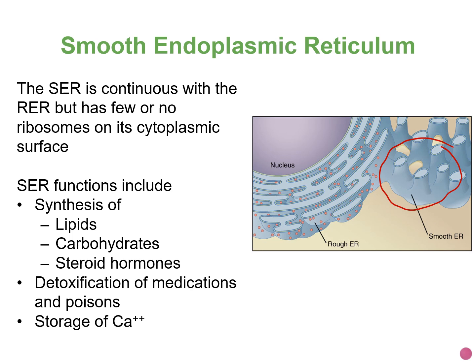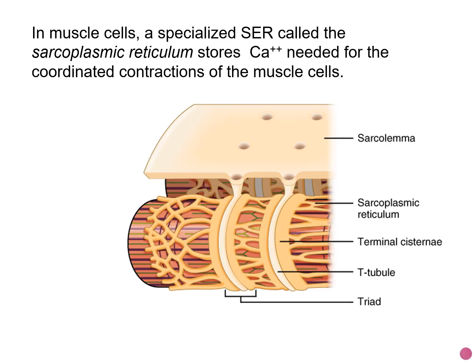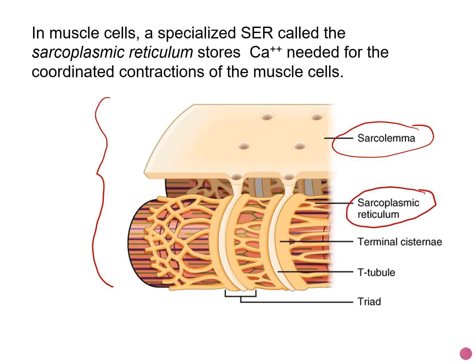In contrast to the rough ER, the smooth ER has no ribosomes attached to its surface. Its main function is to synthesize lipids, though it can also produce carbohydrates and steroids — nonpolar or water-fearing hormones. The smooth ER can also detoxify medications and poisons, and in some tissues it is involved in the storage of calcium. This is especially true in human muscle tissue; in skeletal muscle cells, the equivalent structure is called the sarcoplasmic reticulum, which is responsible for storing calcium involved in muscle contraction.